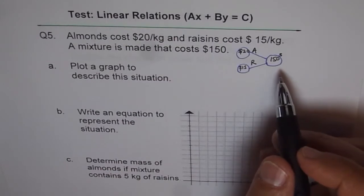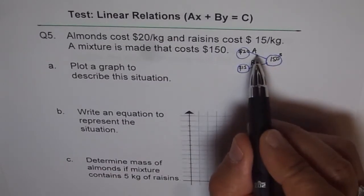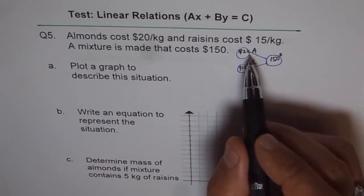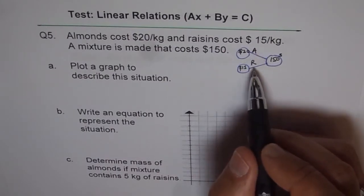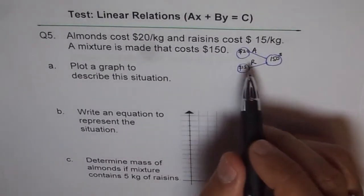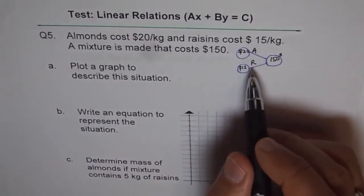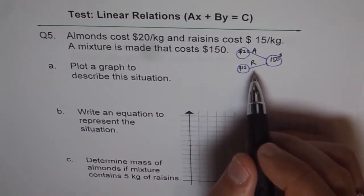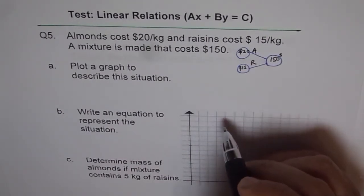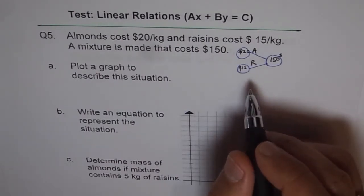So we have defined our variables as A is the mass of almonds and R is the mass of raisins in our mixture. I am not writing it, but you need to write it down. Let A be the mass of almonds and R be the mass of raisins in the mixture.